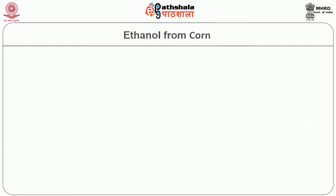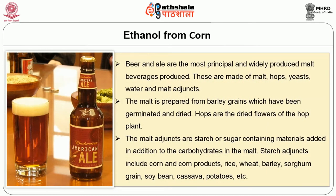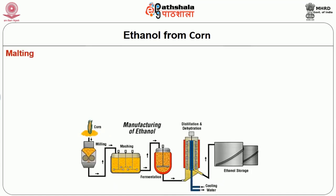The next important source is corn. Beer and ale are the most principal and widely produced malt beverages. These are made of malt, hops, yeast, water and malt adjuncts. The malt is prepared from barley grains which have been germinated and dried. Hops are the dried flowers of the hop plant. The malt adjuncts are starch or sugar-containing materials added in addition to the carbohydrate in the malt. Starch adjuncts include corn and corn products, rice, wheat, barley, sorghum, grain, soybean, cassava, potatoes, etc.